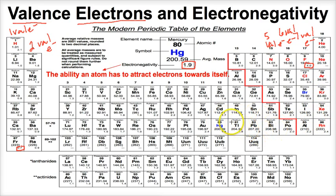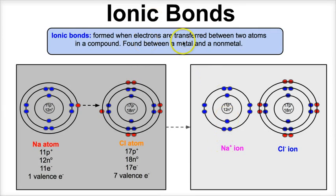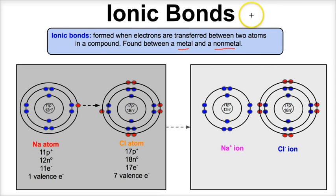So let's take a look now at ionic bonds versus nonpolar covalent bonds versus polar covalent bonds, and apply the concepts of the duet rule, the octet rule, and electronegativity. The first intramolecular force we're going to talk about is ionic bonds. Ionic bonds are bonds that form between atoms when electrons are transferred between the two atoms in a compound. These are typically found between metals and nonmetals.